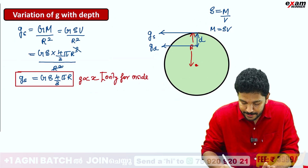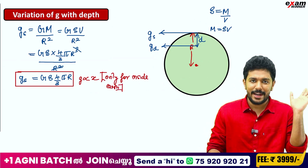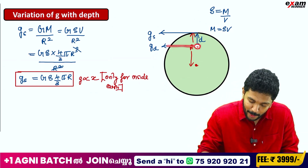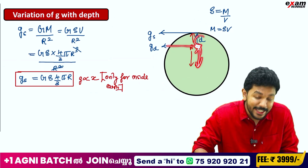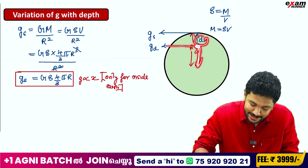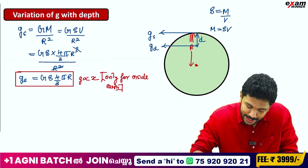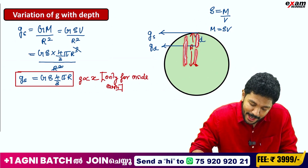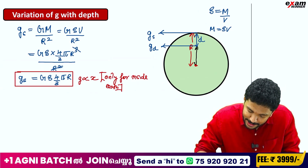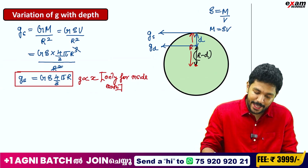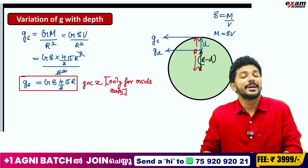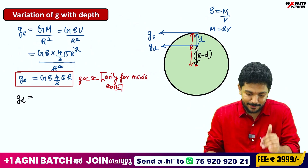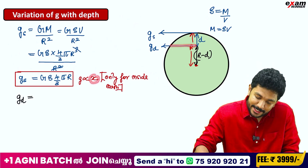Let's look at a point inside the earth at depth D. The distance from the center to this point is not R — it is capital R minus D. So this distance is simply capital R minus D. That is why, to find g at depth D, we use R minus D as the distance from the center.